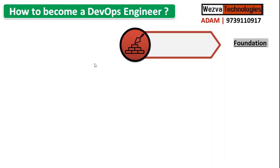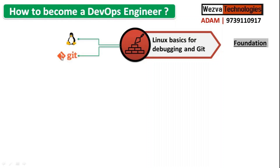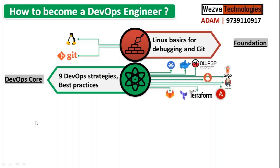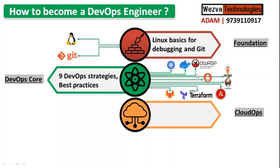Regardless of your experience — whether fresher, intermediate, or experienced — the first foundation you should have is Linux and basic version control like Git, because these are the very fundamental things. When you start writing your Dockerfile, Jenkinsfile, or Kubernetes YAML, you need to store it in Git. After that come your core skills for DevOps, which is where the nine best practices come in.